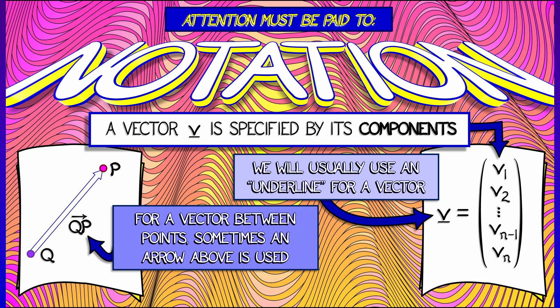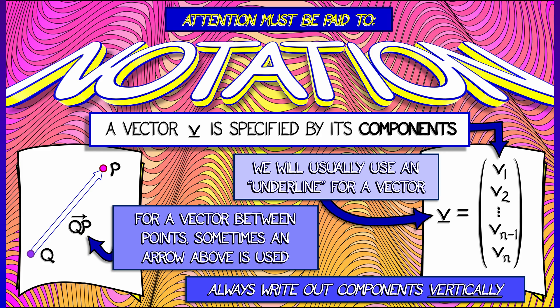From time to time, when we do need to express a vector as a difference between two points, say from q to p, we may write the vector as qp with an arrow on top, but we will always write out the components vertically. I strongly recommend you get in the habit of doing that.